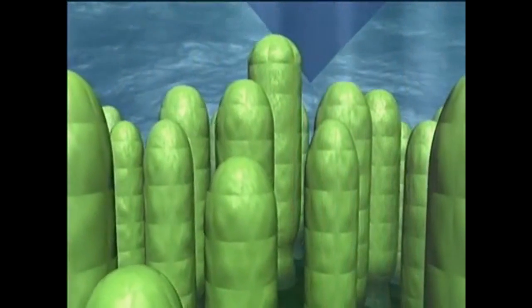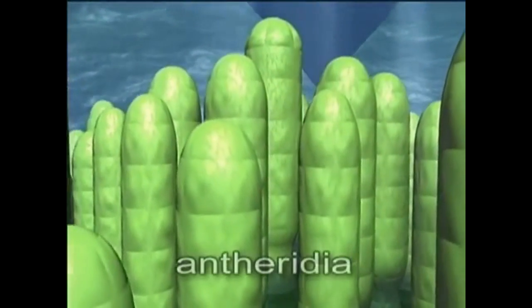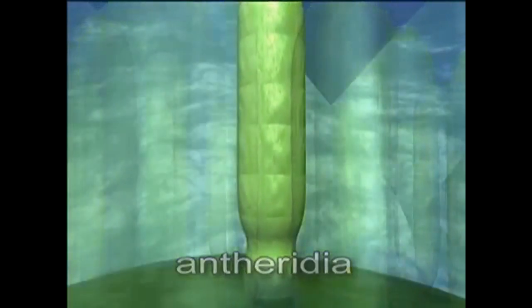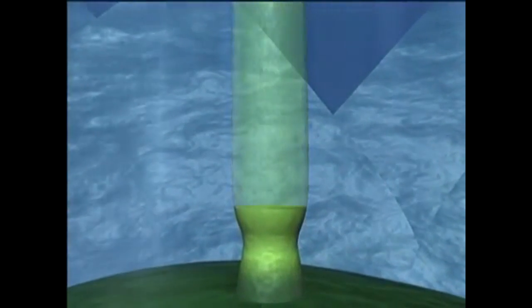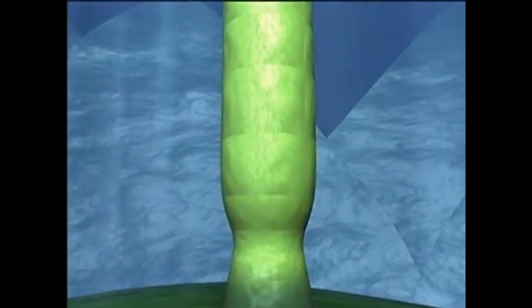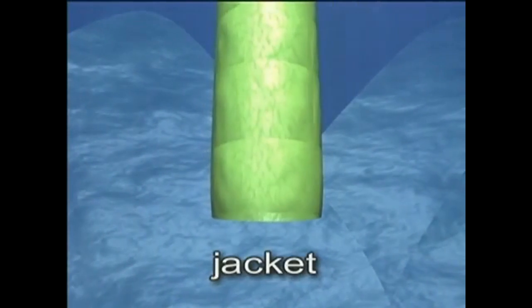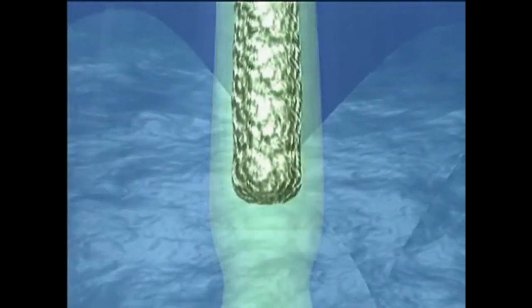Some stem tips are male and contain reproductive structures called antheridia. These are complex organs consisting of many cells. Each is supported by a stalk. The upper portion consists of an outer protective jacket that surrounds a group of sperm cells.